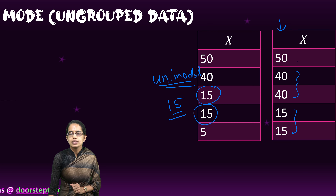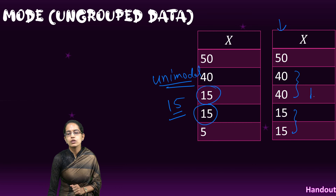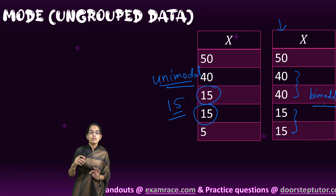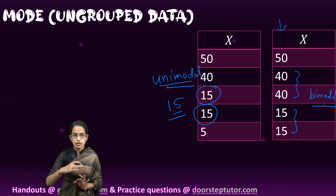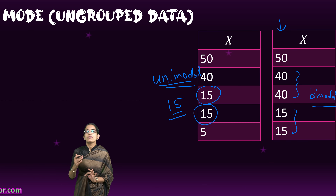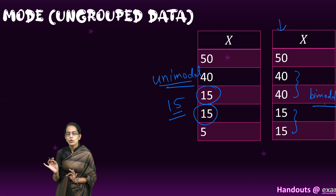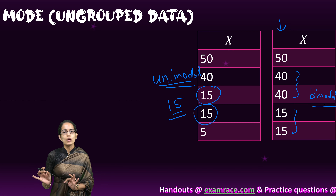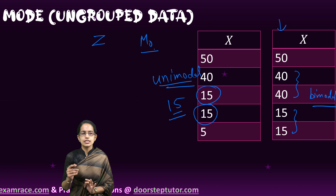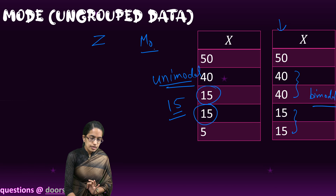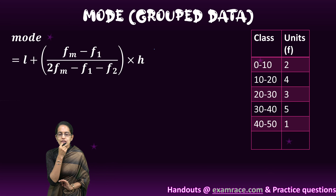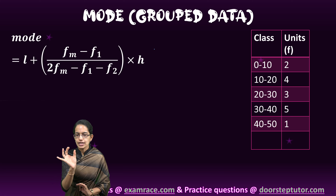The next case of ungrouped data has values 50, 40, 40, 15, 15. I have two values which are occurring twice — 15 and 40. Since there are two values both occurring twice, we call this bimodal because there would be two peaks witnessed. If there are values occurring three times, we call this tri-modal, and there can be multi-modal as well. Mode is symbolized as Z or MO, and that is the usual connotation we use for ungrouped data.